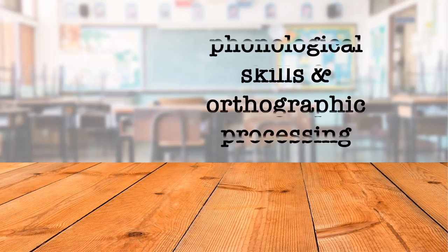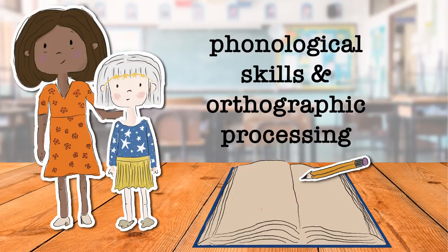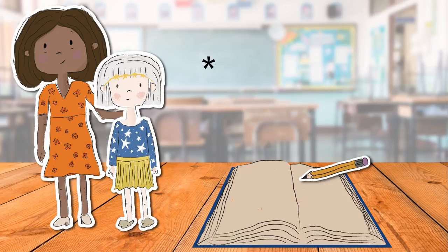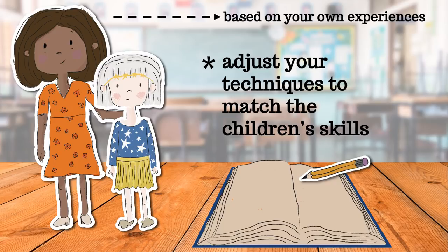Both phonological skills and orthographic processing are important for children to read and write words. How can you help them develop these skills? It is important to adjust your techniques to match children's skills. You know what will help children partly based on your own experiences. It is also important to pay attention to what is suitable to your script. Here are some examples of techniques used to help children to read and to write.